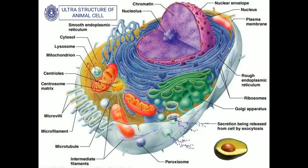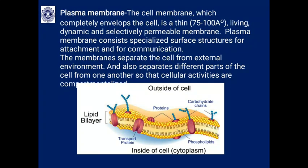The first organelle is the plasma membrane — the outer limiting membrane. It envelopes the cell, is a very thin, living, highly dynamic, and selectively permeable membrane. It consists of specialized surface structures for attachment and communication. The membrane separates the cell from the external environment and separates different parts of the cell from one another, compartmentalizing cellular activities. This trilaminar, lipid bilayer structure is typical of all cell membranes — a lipoprotein structure made of phospholipids, proteins, and glycoproteins.